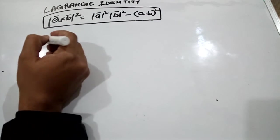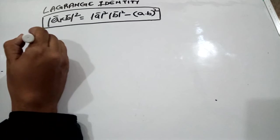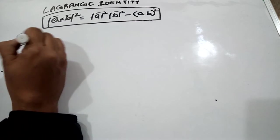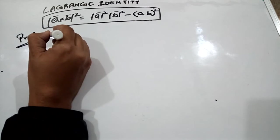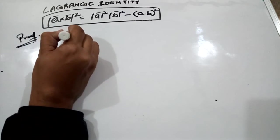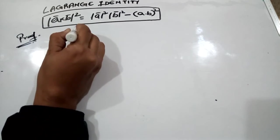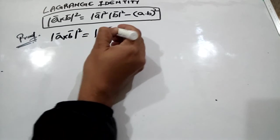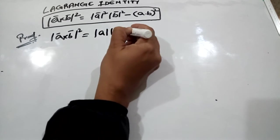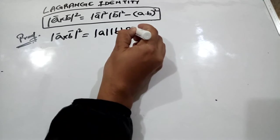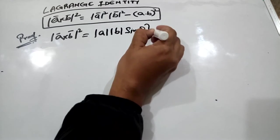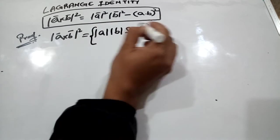Now let's understand the proof of this. So here is the proof: a cross b square is equal to, it can be written as mod of a mod of b sine theta whole square.